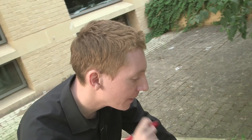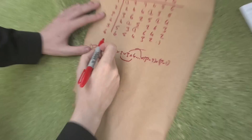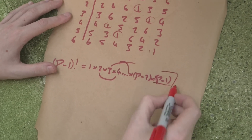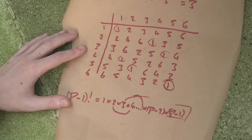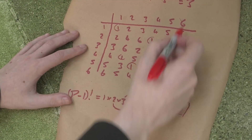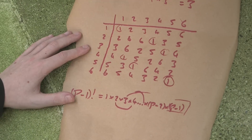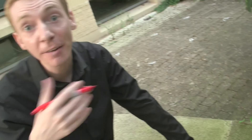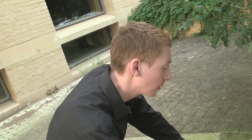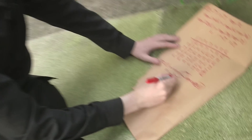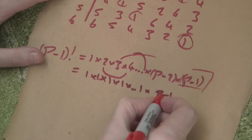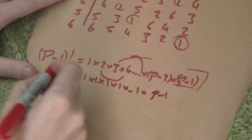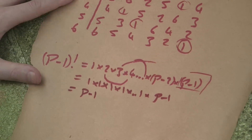The only thing you can't pair is the last thing, p−1. In this example it was 6, because it's right there in the corner. 6 times 6 is 1, so it doesn't have a pair. Everything else gets paired up, so it becomes 1 times 1 times 1 times 1 times 1, with the p−1 at the end. So how much is left over? p−1.